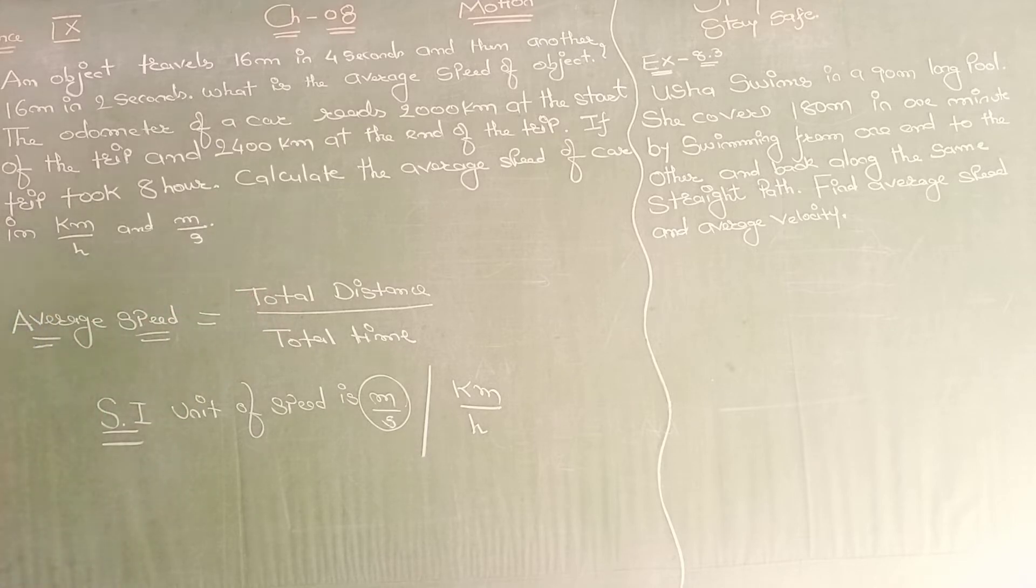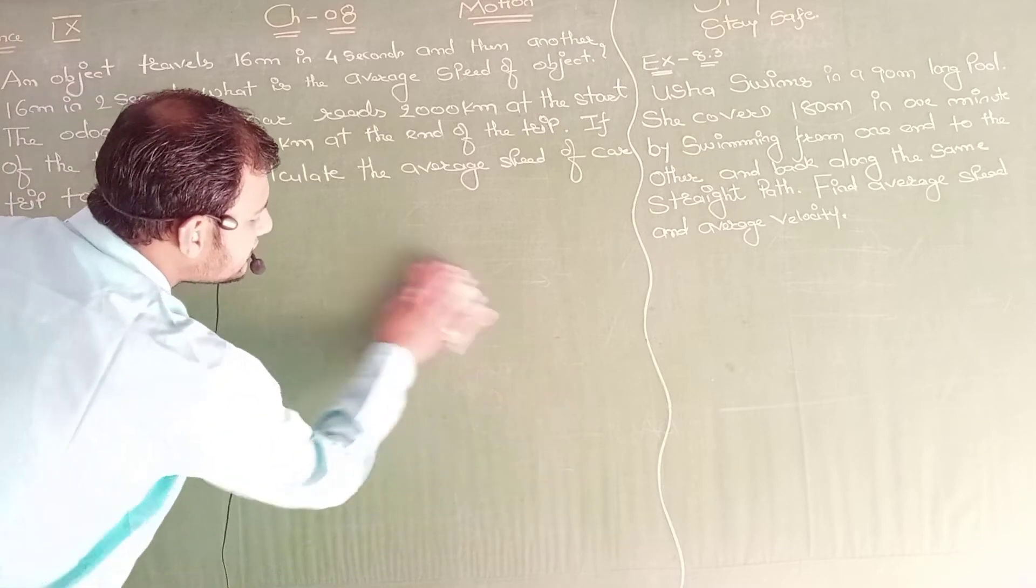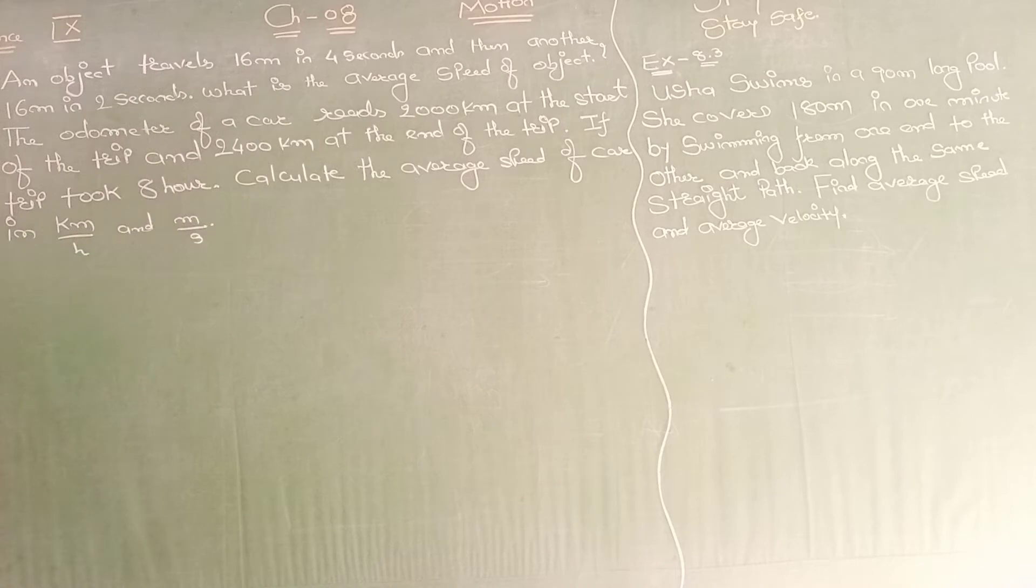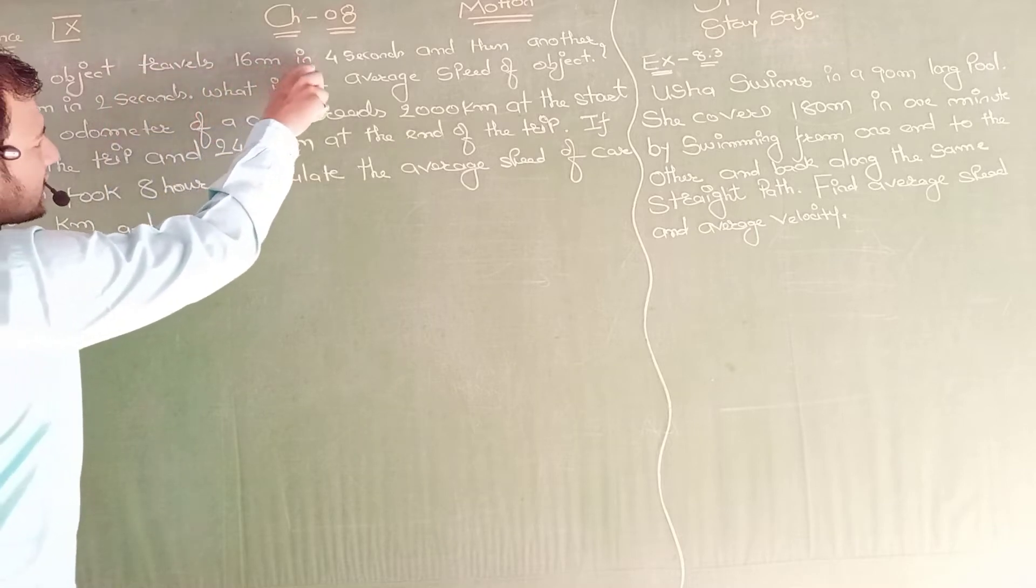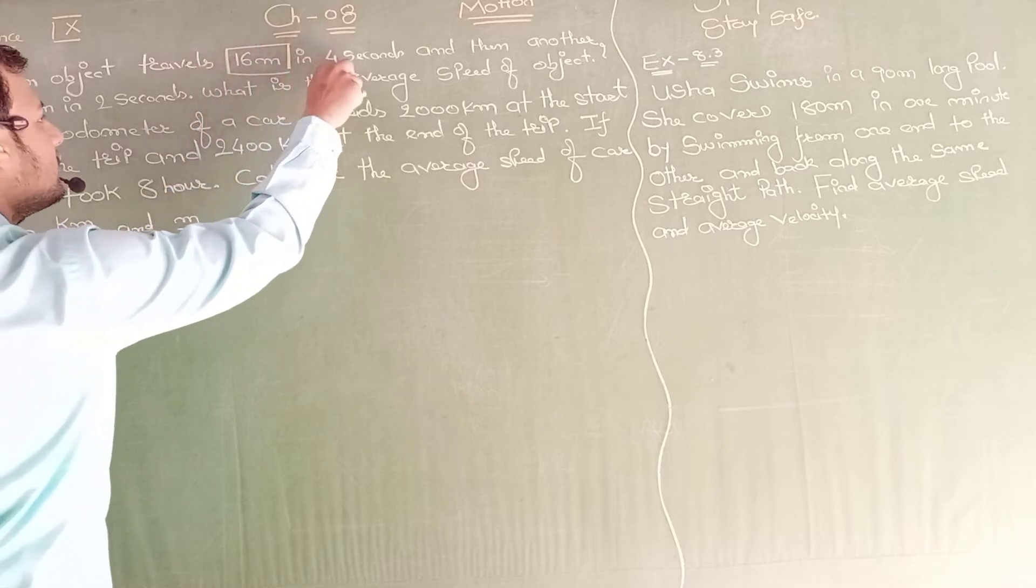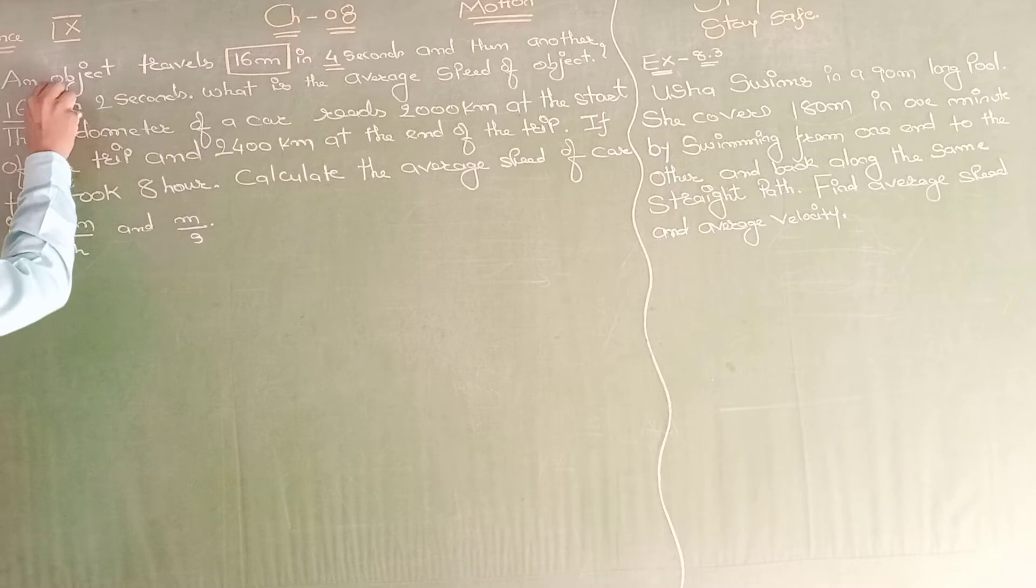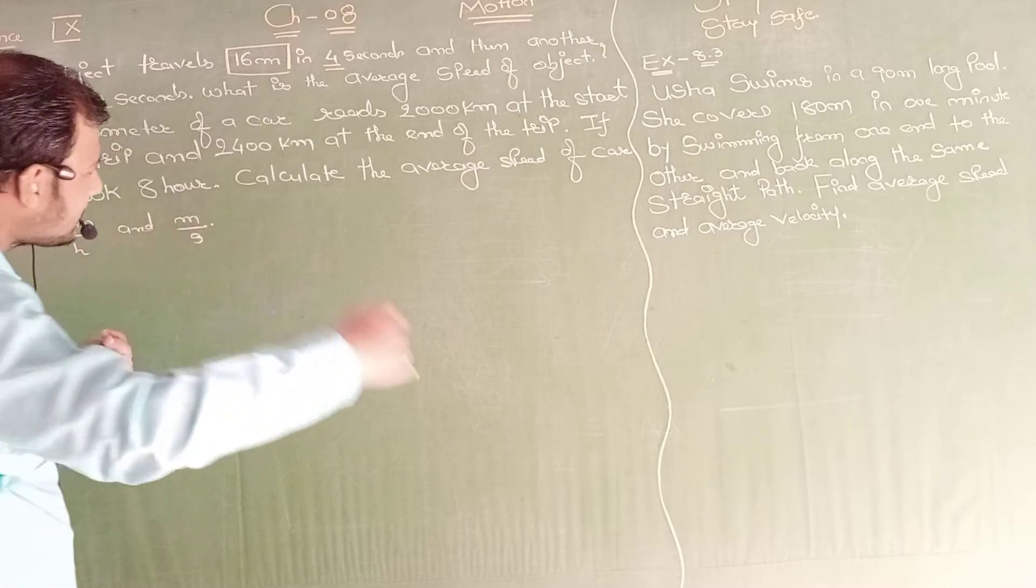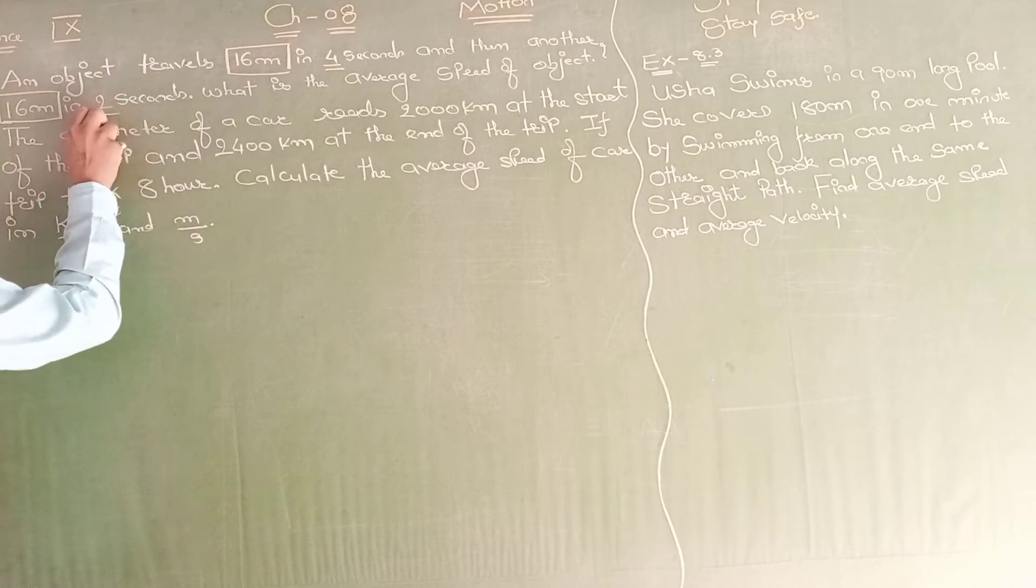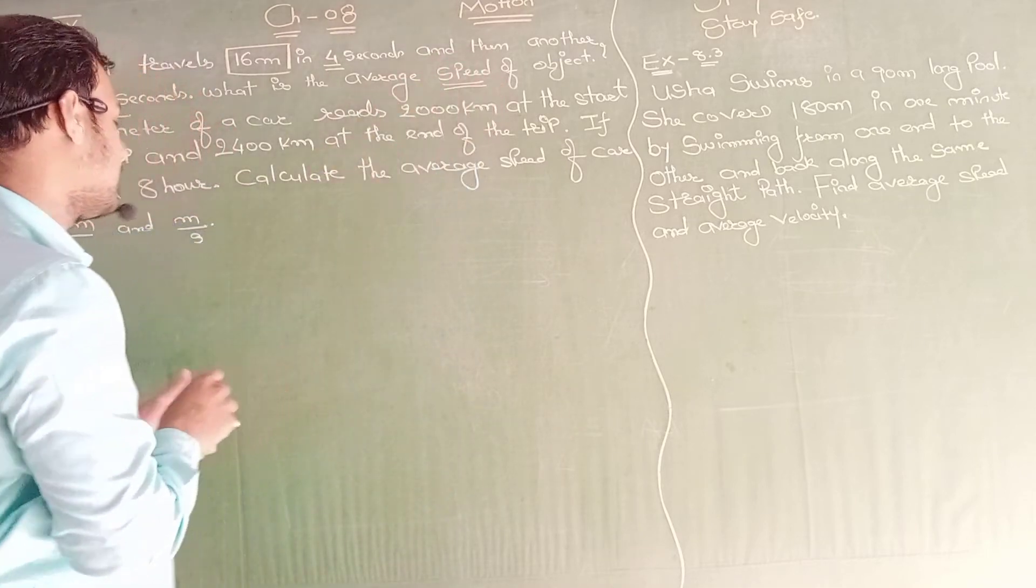I have provided revision lectures for displacement, distance, uniform motion, and non-uniform motion. On the basis of that video, I am going to teach you example 8.1. An object travels 16 meters in 4 seconds, and then another 16 meters in 2 seconds. What is the average speed?